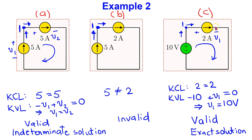For interconnection C, this interconnection is valid and has an exact solution. The 10 volt voltage source and the 2 amp current source are connected in series in this single loop circuit. Thus, the 10 volt voltage source is carrying 2 amp current and KCL is satisfied. The 2 amp current source has a 10 volt voltage drop across it and KVL is also satisfied. Because an ideal independent voltage source supplies the same voltage regardless of the current, and an ideal independent current source supplies the same current regardless of the voltage drop across it, this interconnection is valid.